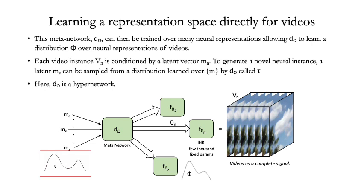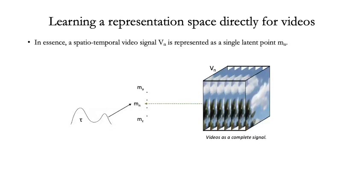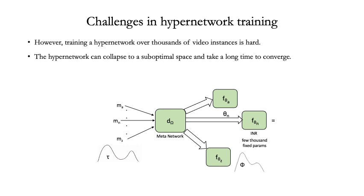Here, tau is a continuous representation space for videos. D is a hypernetwork. This way, an entire video signal V is represented by a single latent point M sampled from a video space tau. However, hypernetworks are notoriously unstable to train, especially on complex spatiotemporal signals like videos.